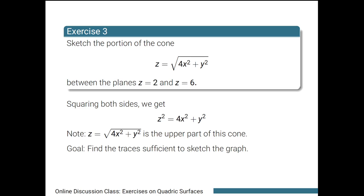In this exercise, we are tasked to graph the portion of a cone with equation z equals square root of 4x squared plus y squared. We want the portion between the planes z equals 2 and z equals 6. Notice that when we square both sides of this equation, we get z squared equals 4x squared plus y squared. The given equation is just the upper part of this cone. So to sketch the portion we want, we need to use the given planes z equals 2 and z equals 6 along with the other sufficient traces.